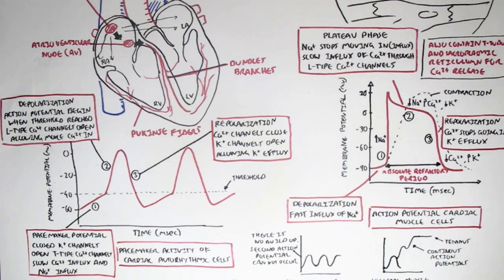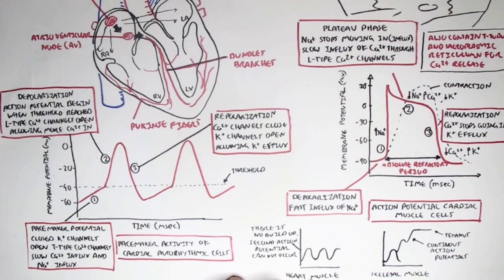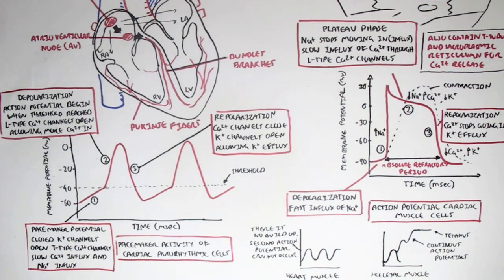The pacemaker cells pass their action potentials to the cardiac muscle cells, which changes their membrane potential and causes contraction. Next, we will look at the cardiac cycle, the blood supply to the heart itself, and the coronary arteries.